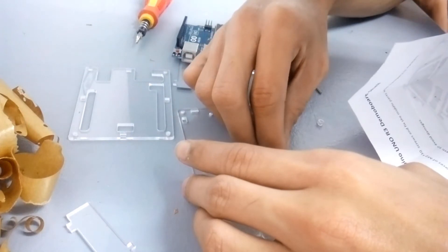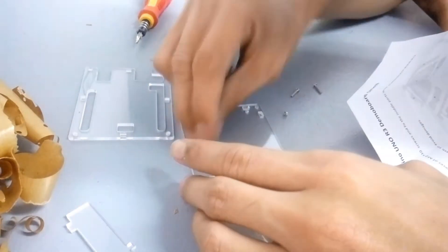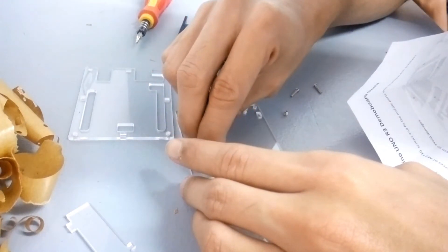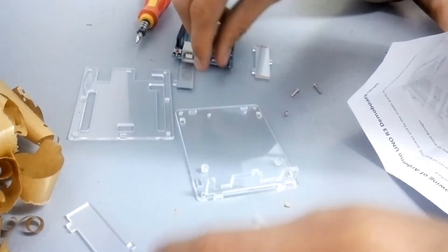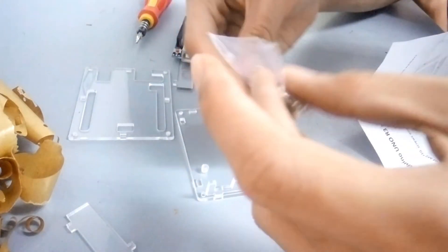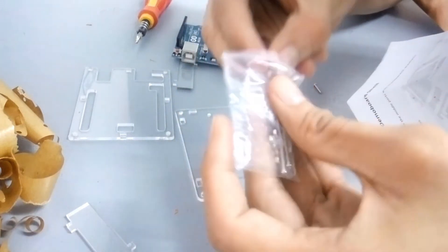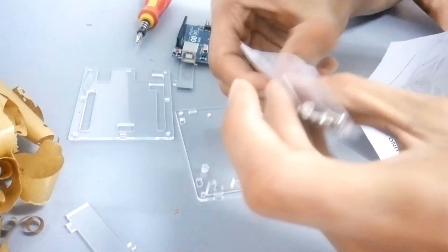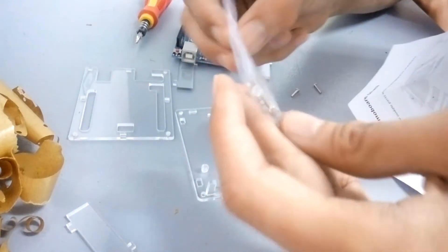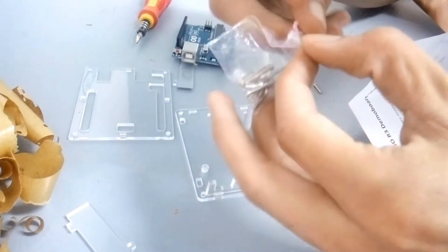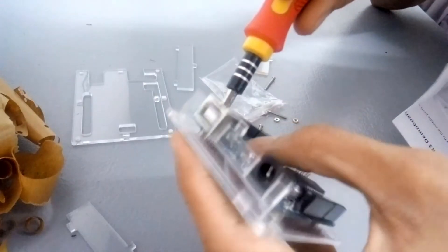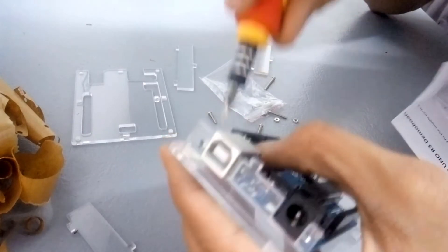The acrylic case comes with bolts and screws that will use as locking mechanism. There are two types of screws that the case had. First, there are four short length screws that will place to the board and to the body of the case. Second, there are four long length screws that will place to the edge of the case. The screwdriver will use to fasten the screws and bolts.